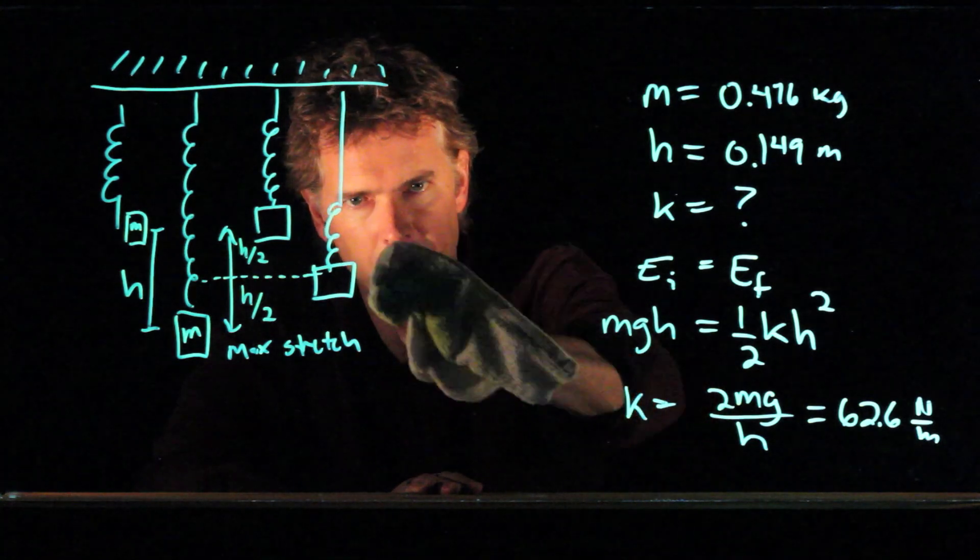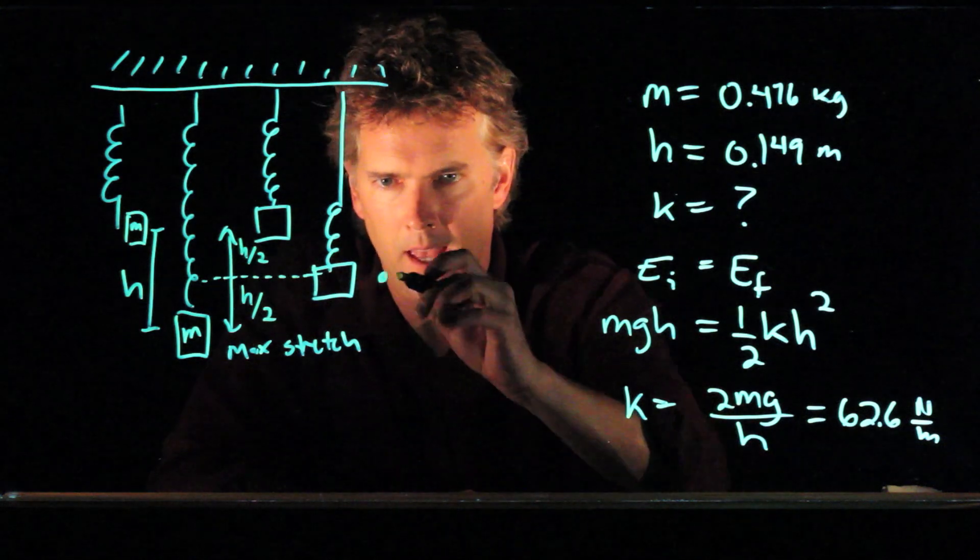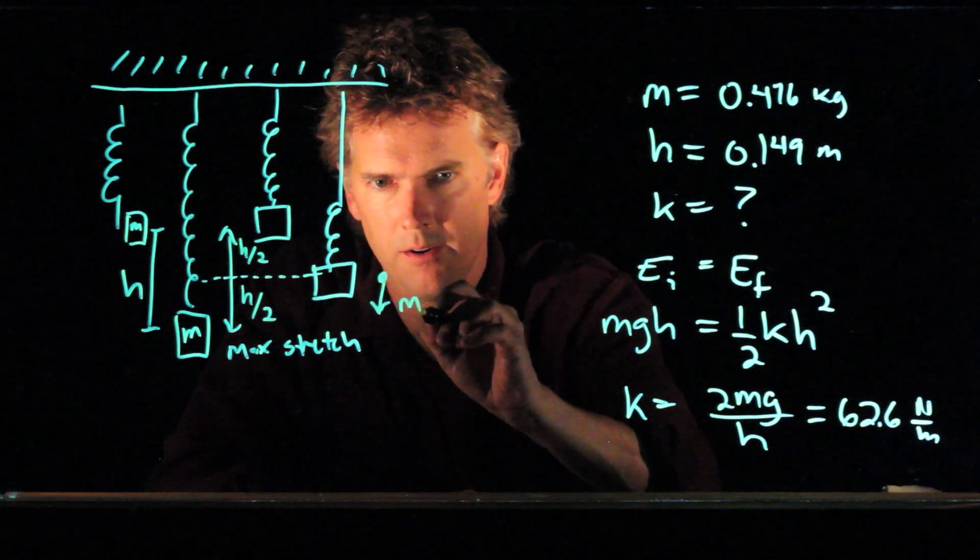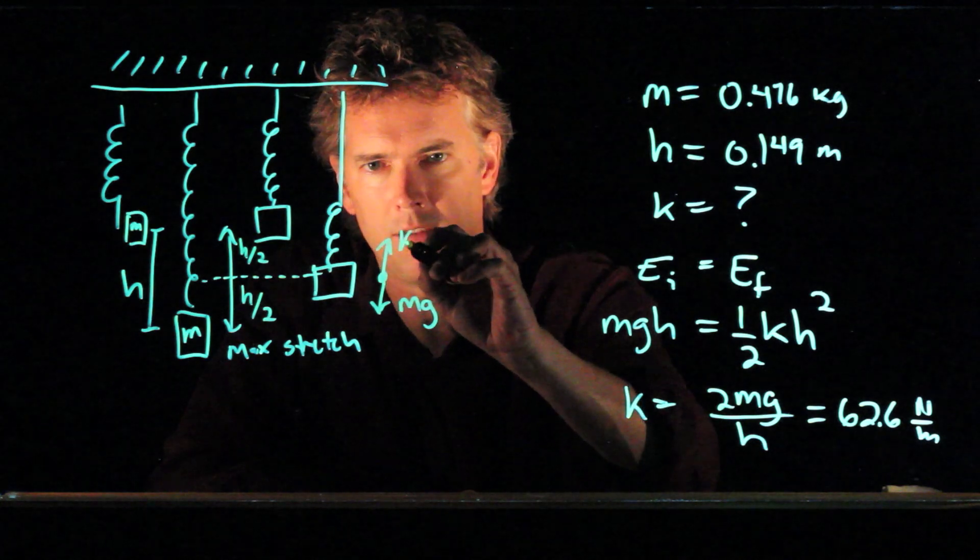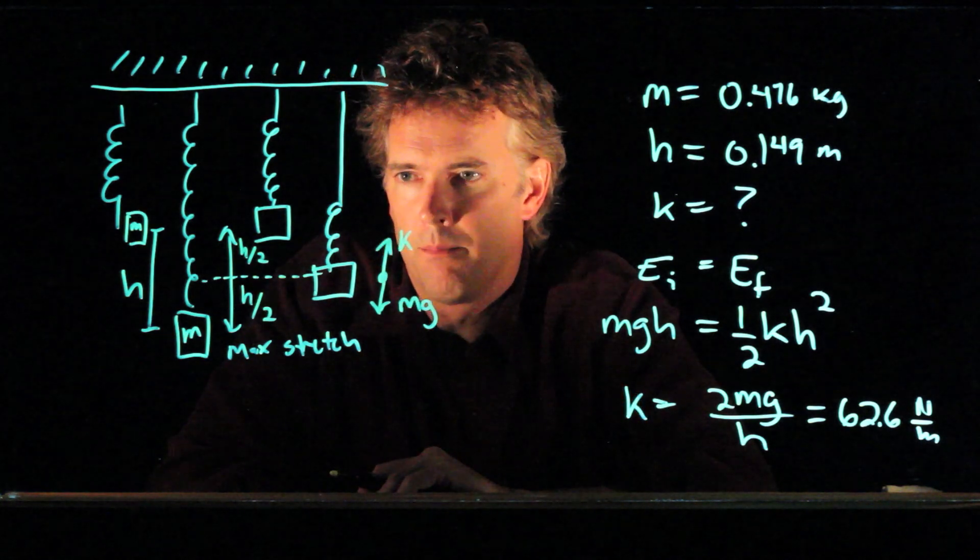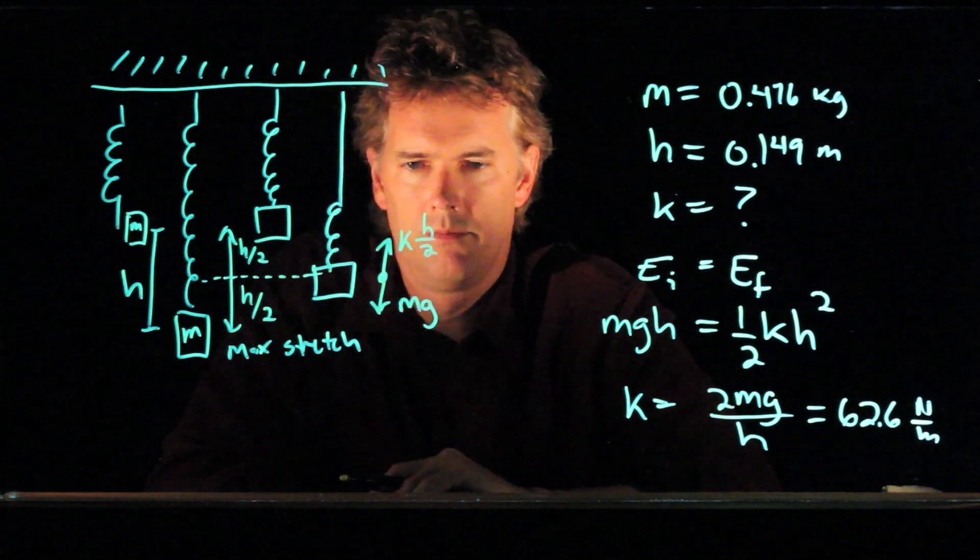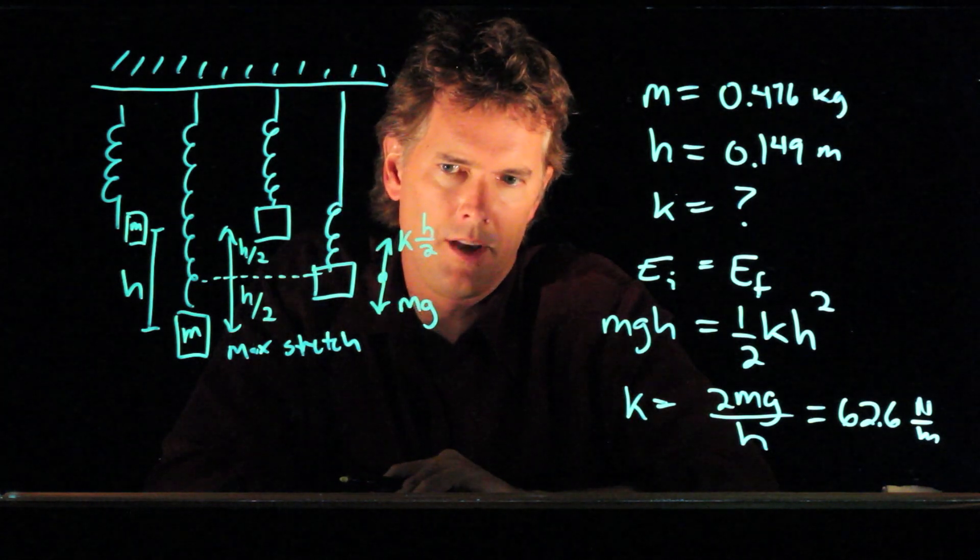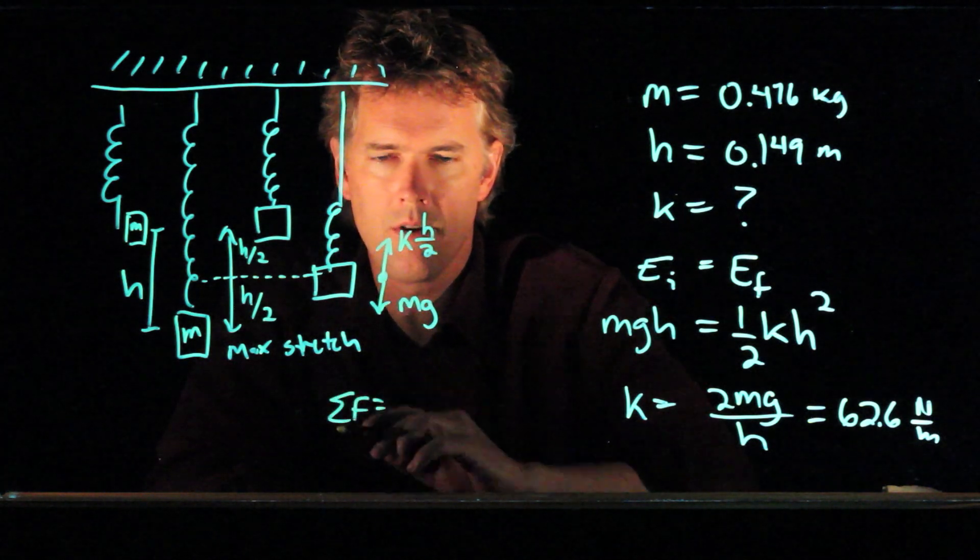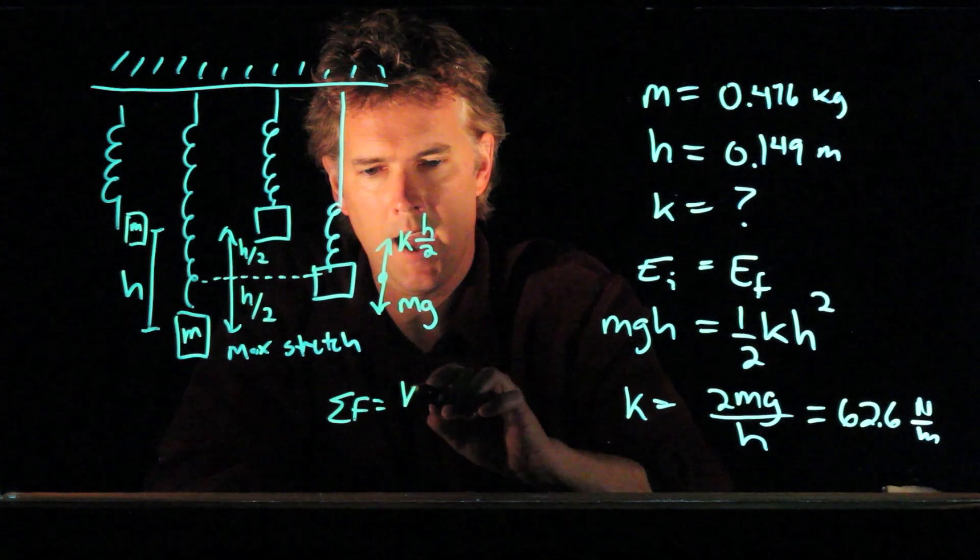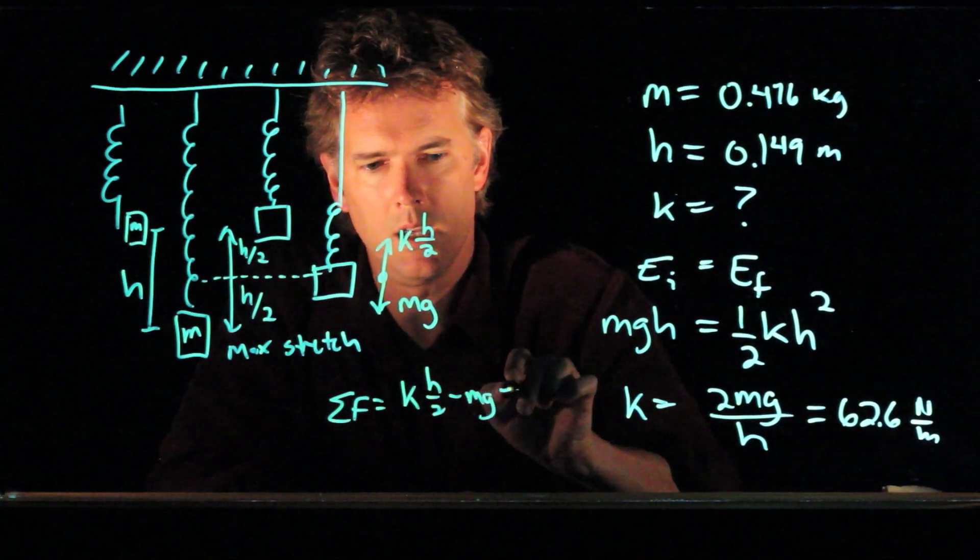When it finally comes to equilibrium, we can draw a free body diagram right here. And we know that mg down has to be equal to k x going up. But in this case, the stretch is h over 2. And so now if I set those equal, sum of the forces have to be 0. What do we have? We have k h over 2 minus mg equals 0.